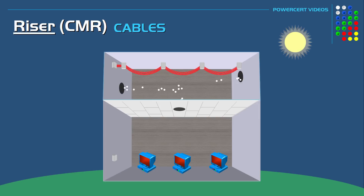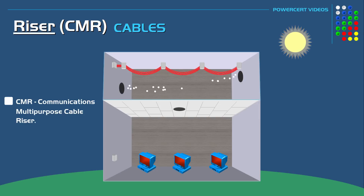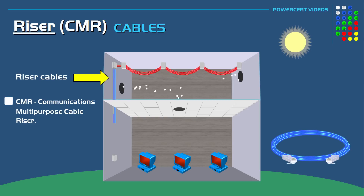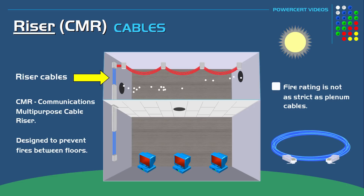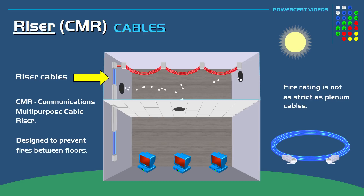There is another type of PVC rated cable called CMR, which stands for Communications Multi-Purpose Cable Riser. These cables are installed vertically, rising between floors in a building. They are run through risers or vertical shafts and are designed to prevent fires from spreading between floors. The fire rating of CMR cables is not as strict as plenum rated cables, so they should not be used in plenum areas. CMR cables are also less expensive than plenum cables.